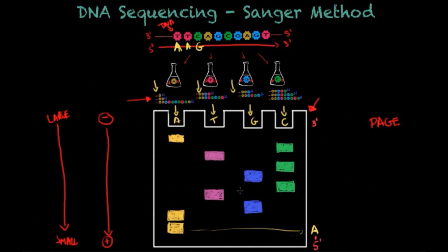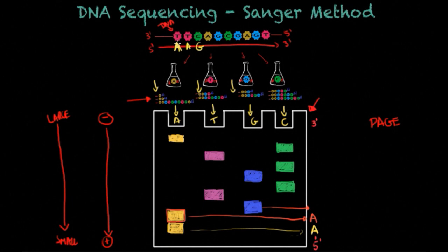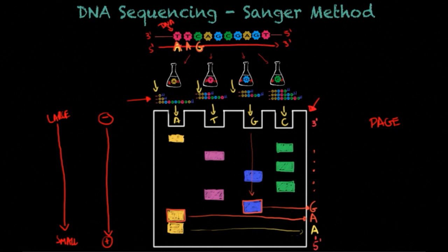Moving to the second band found a little further up, you can also say it's an adenine. The third band, going further up, corresponds to a larger segment comprising two A's and a G, so A, A, G — and you would know that the next nucleotide is a G. This is how you proceed with the sequencing of this particular DNA fragment, or with any other fragment, using the Sanger method.